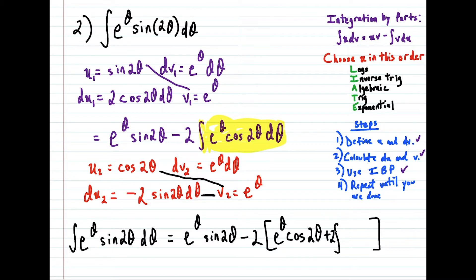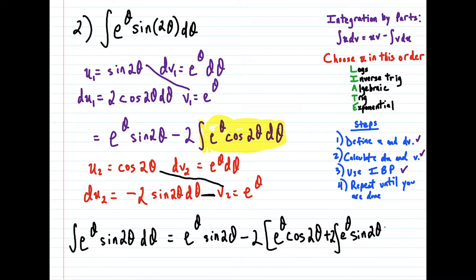So if we bring it in front of the integral, this is going to come out as a plus 2 now. So instead of minus negative 2, I could change this to plus 2. And we have e to the θ, and then we have sine 2θ dθ. I'm just going to make a little bit of space here, because this is quite a bit to write. And then I'll re-close that bracket.